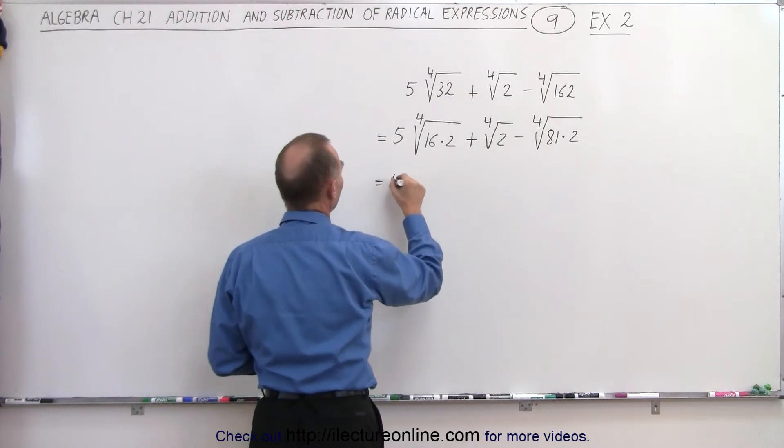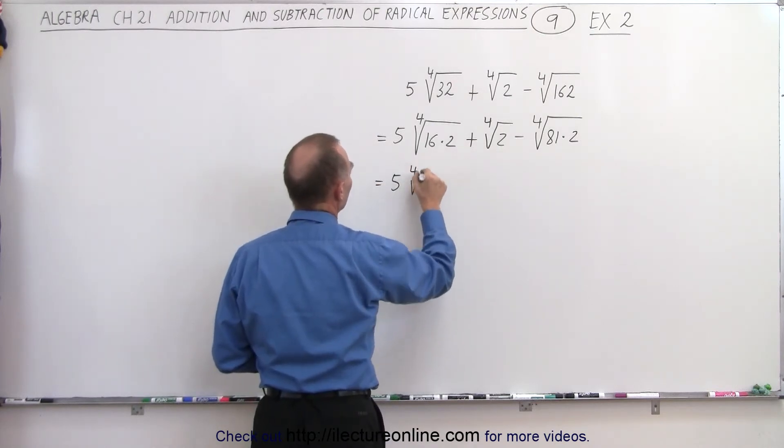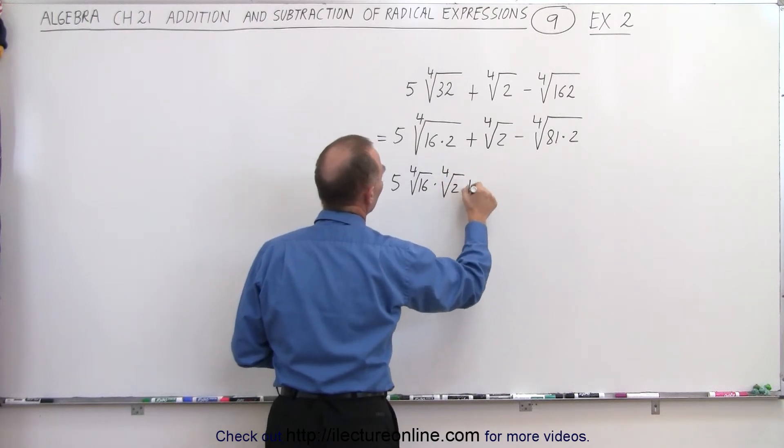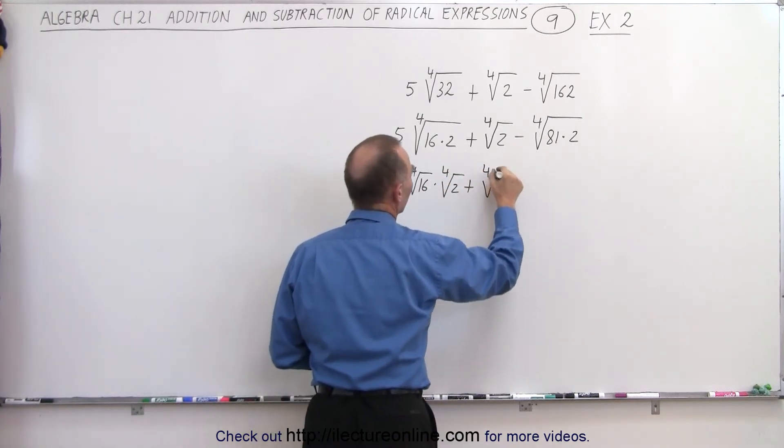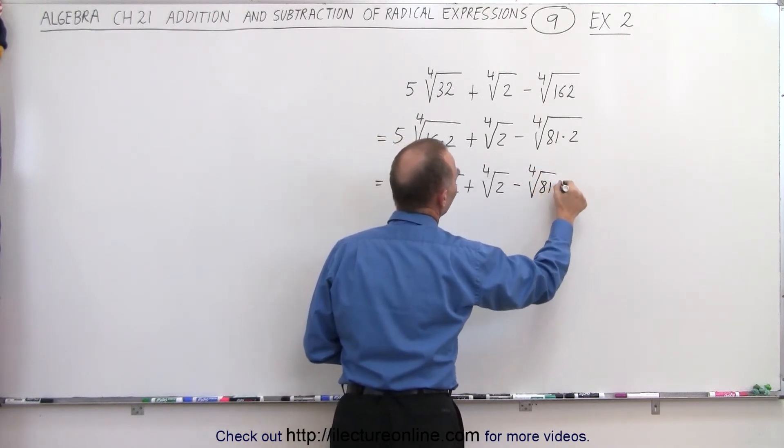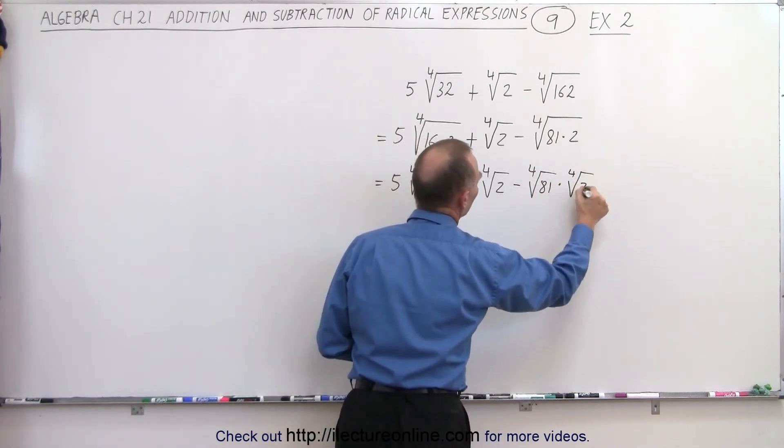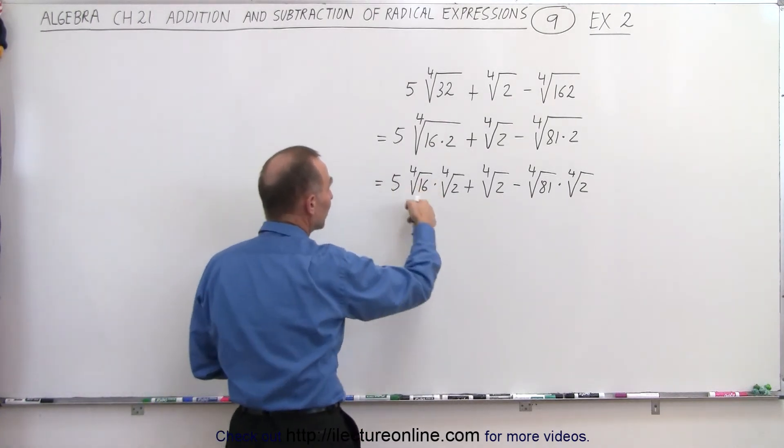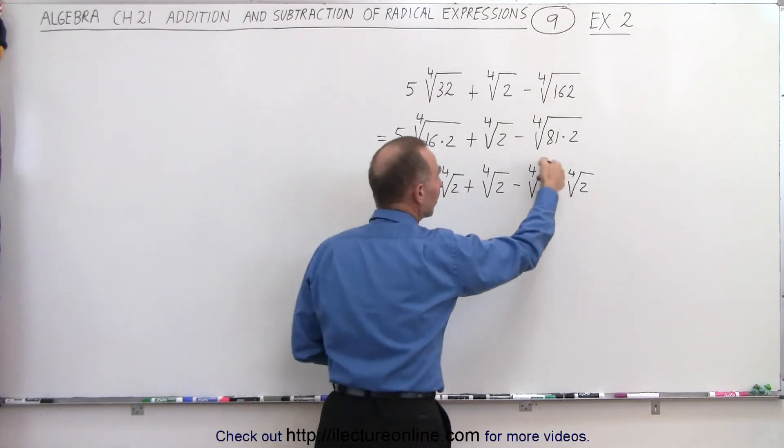So this can now be written as 5 times the fourth root of 16 times the fourth root of 2 plus the fourth root of 2 minus the fourth root of 81 times the fourth root of 2. Now, I didn't have to do that, but I did so I could illustrate that here we can simply take the fourth root of 16 and the fourth root of 81.